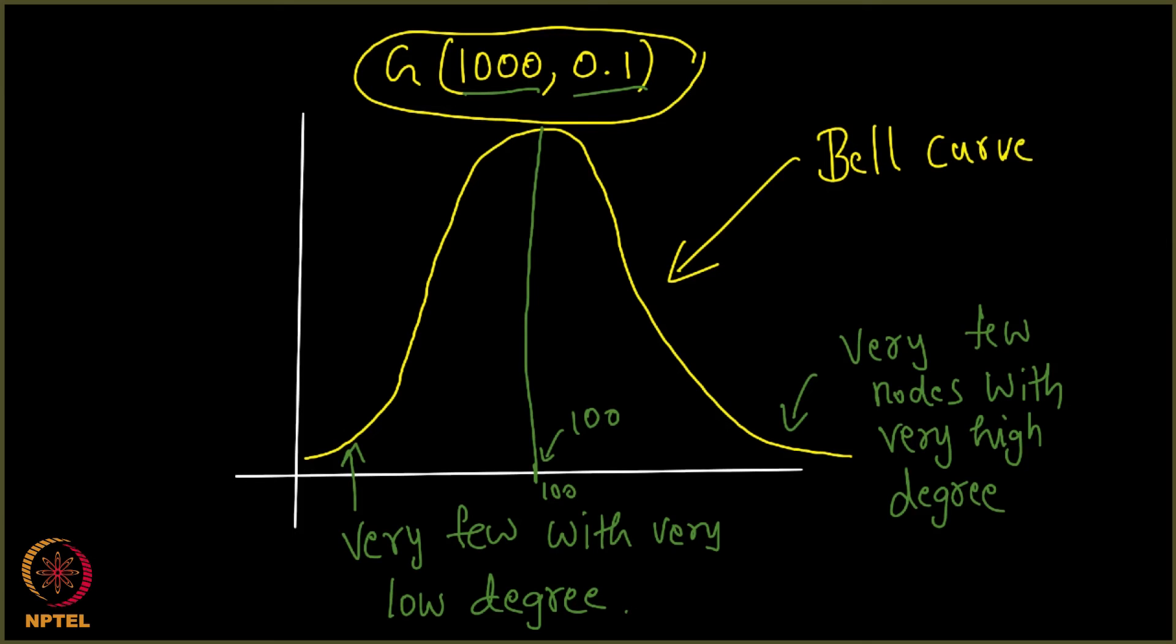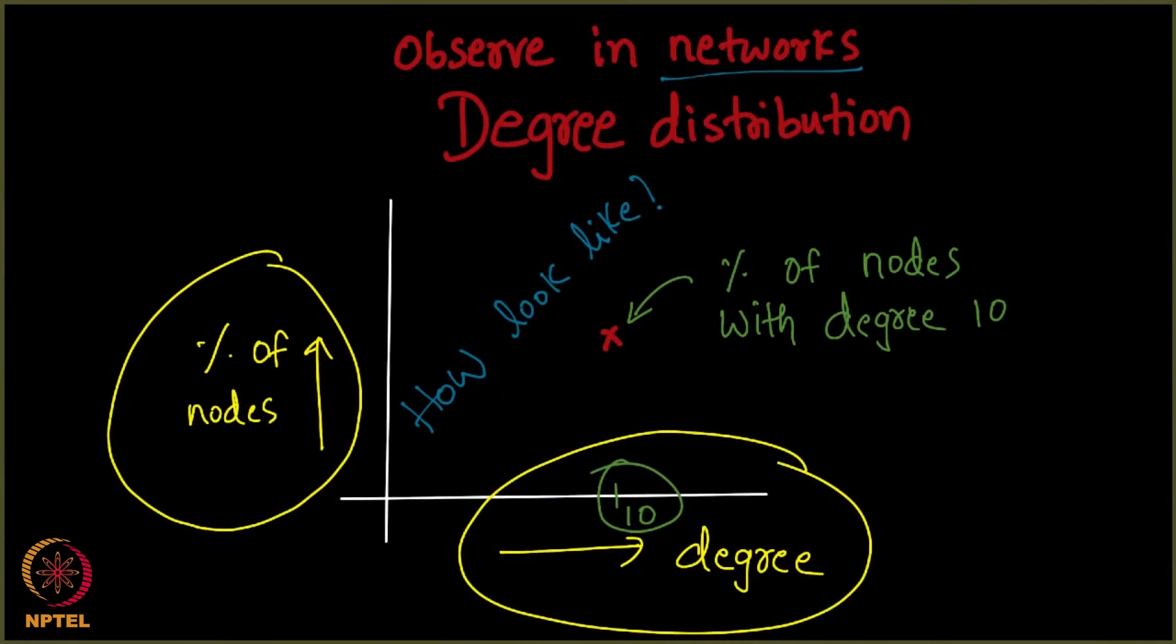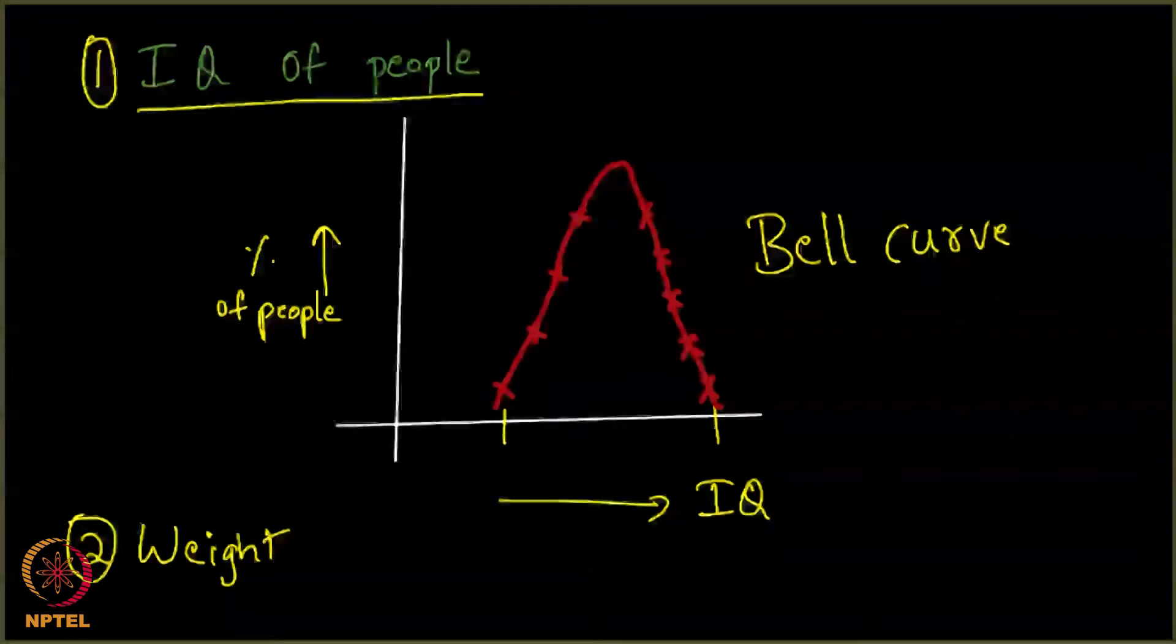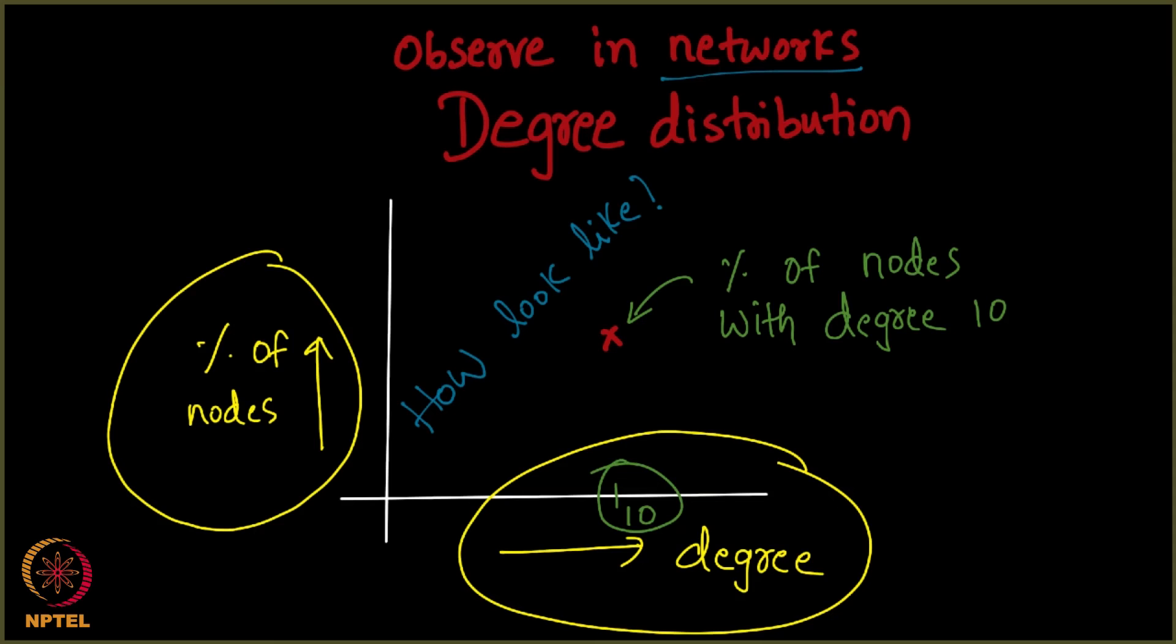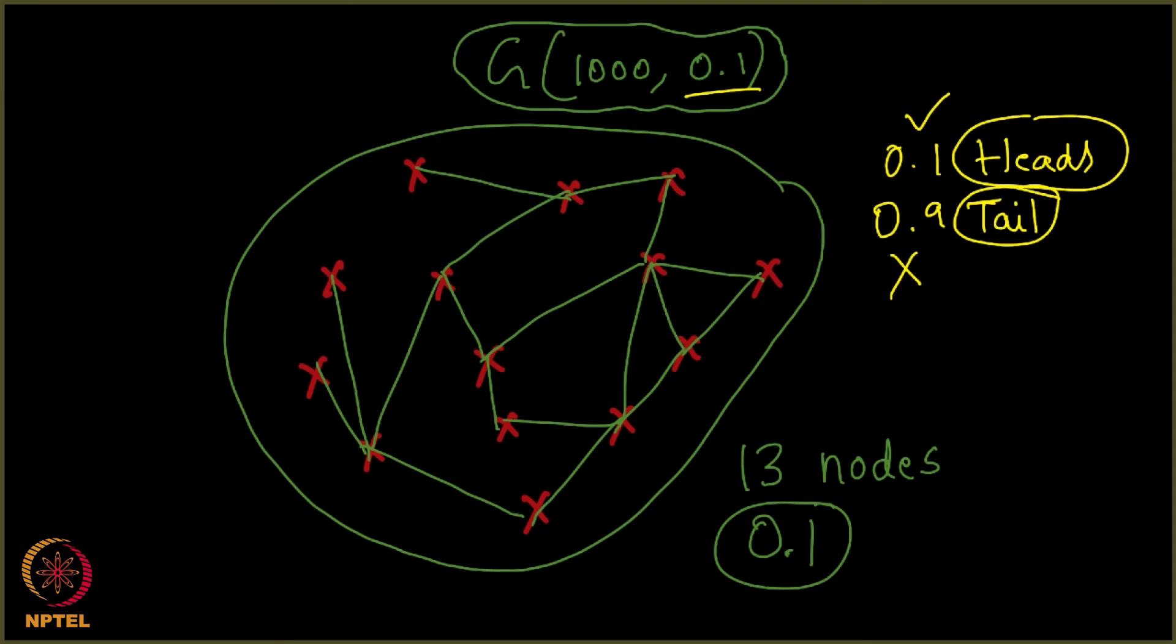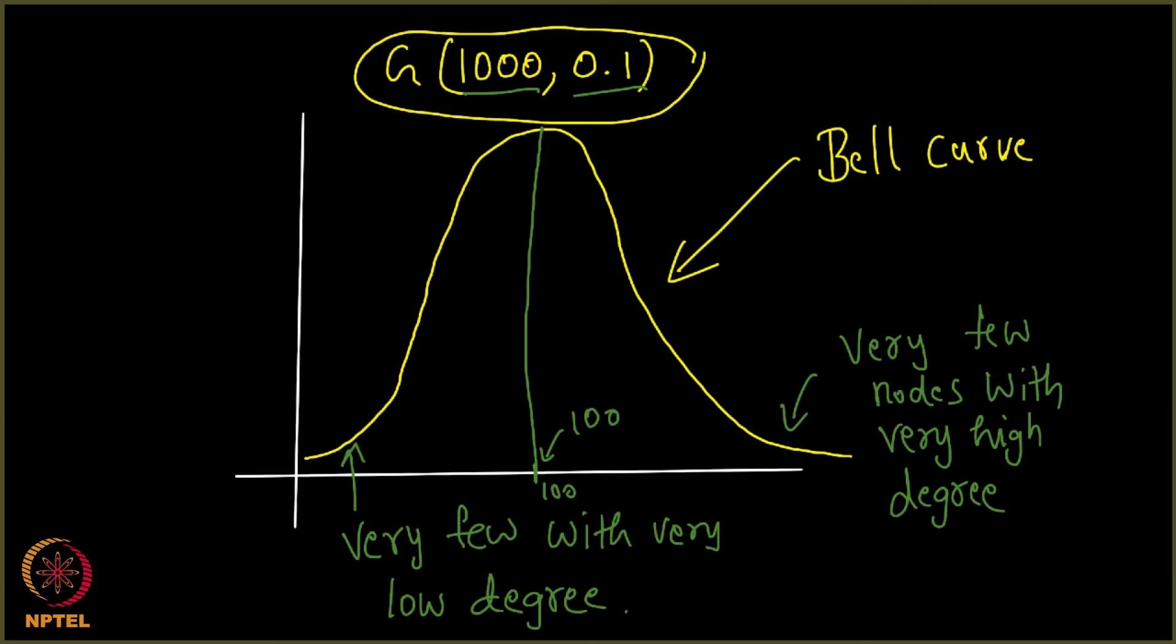So probably you would tell me yeah we saw it in the previous cases, we saw many examples right, it is not at all surprising for us right. So IQ of people you saw, you saw that the degree of nodes follow what is called the normal distribution and everything else looks similar right. If you look at weights of people, height of people, IQ of people, all of them seem to follow this bell curve only. Nothing surprising about it right. So let me write that down. There is nothing surprising about it. Nothing surprising.